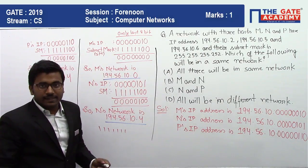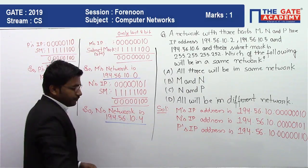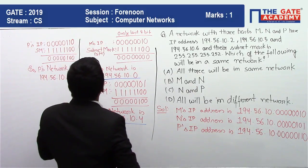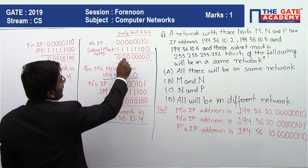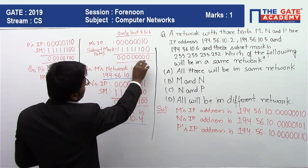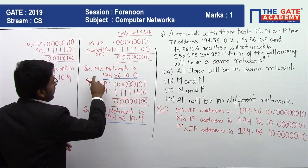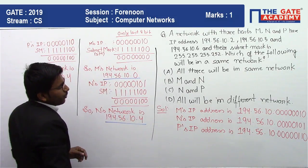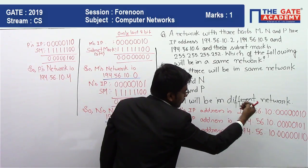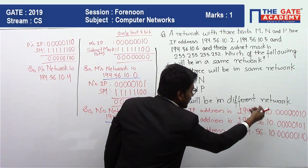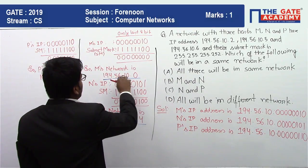So here we have multiplied M's IP with subnet mask and we are getting network ID as last 8 bits only zeros. So M network ID is 194.56.10.0.